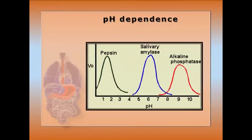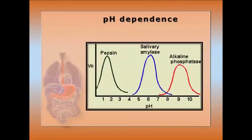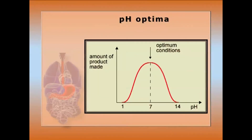pH dependence: enzymes are active in a favorable pH range. Activity is a function of pH, and the stability of the enzyme is also a function of pH. At very low and very high pH, the enzyme is inactivated. pH optima is based on the acid-base nature of the active site amino acids and the ionic interaction between enzyme and substrate, and it varies at the cellular level.